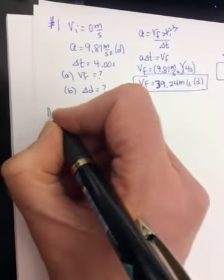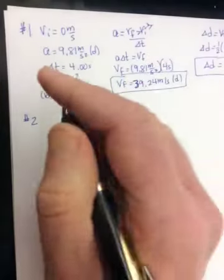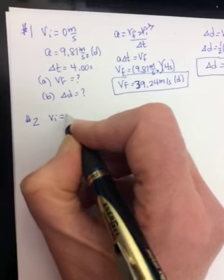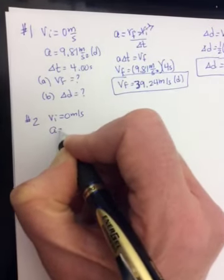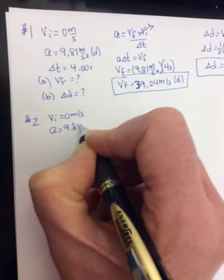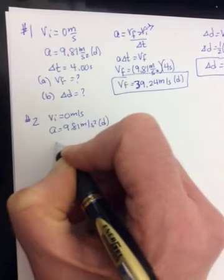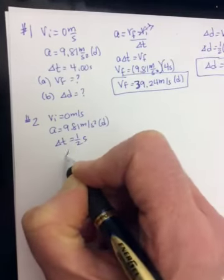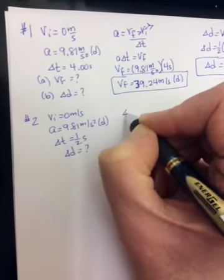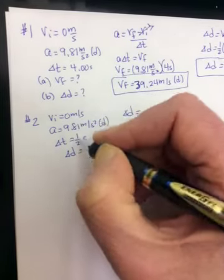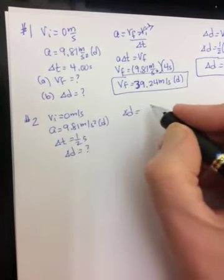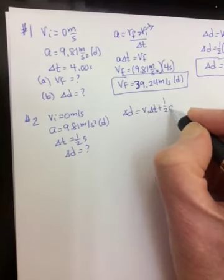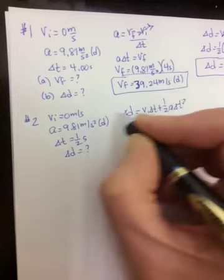Number two says, if you drop a golf ball, how far will it fall in a half a second? You're dropping it, VI is 0. A is 9.81 meters per second squared down, and the time is a half a second. And you're looking for delta D. So again, what equation do you have that has a VI and A and a delta T in it? It should be delta D equals VI delta T plus one-half A delta T squared.